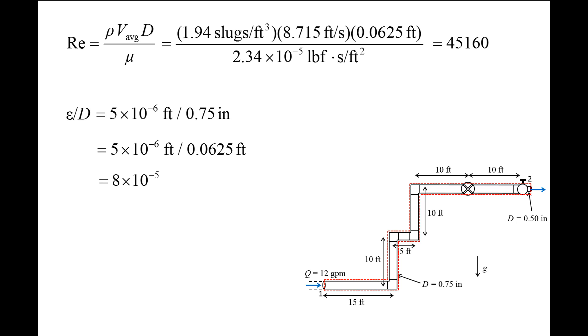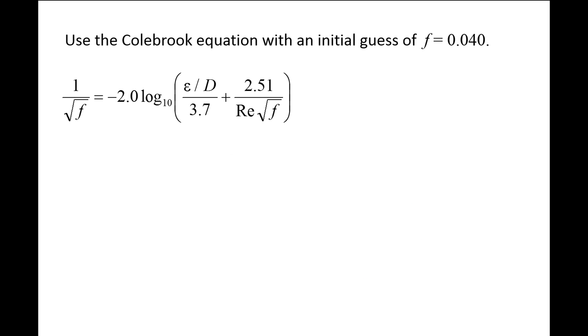We now can calculate the friction factor using the Reynolds number and the relative roughness. We could either use the Colebrook equation, the Halland equation, or the Moody chart. For this example, we will use the Colebrook equation. When using the Colebrook equation, we need to start with an initial guess. Typical values of the friction factor are between 0.01 and 0.04. We will arbitrarily select 0.04 as the initial guess.